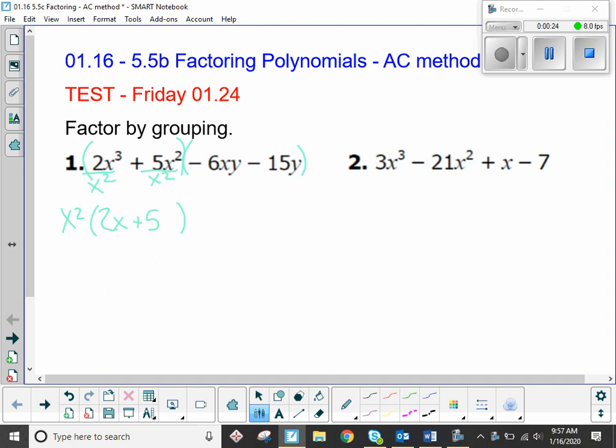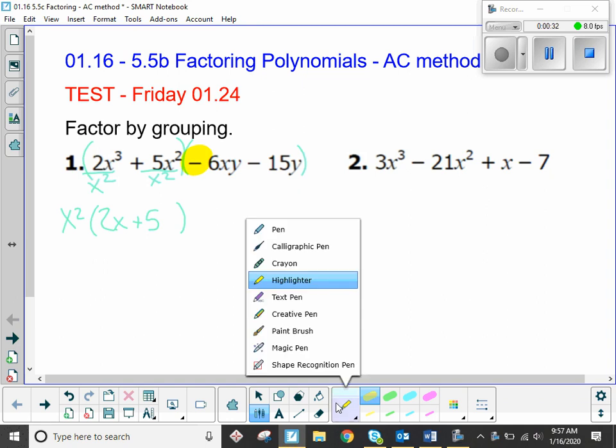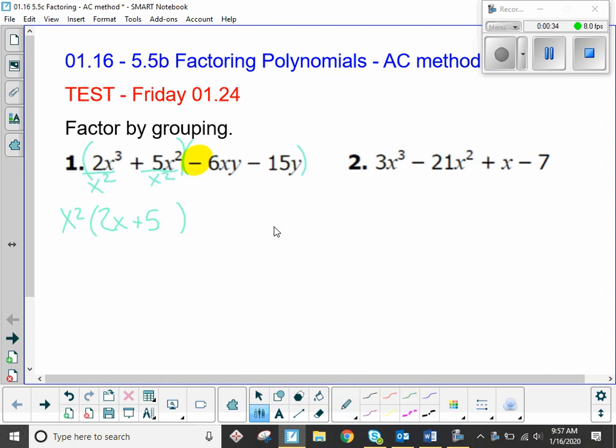2x plus 5. And what's happening in that second group that we have to be careful about? There's negatives. So whenever there's a negative right here, when you do your GCF, you make it negative, right? So I'm just going to go ahead and write that down. And what do six and fifteen have in common? Three. And they have a y. That's right. So you're going to divide that negative 3y out of each thing.